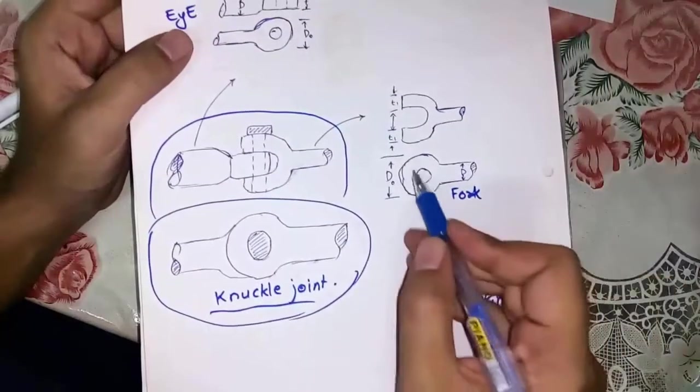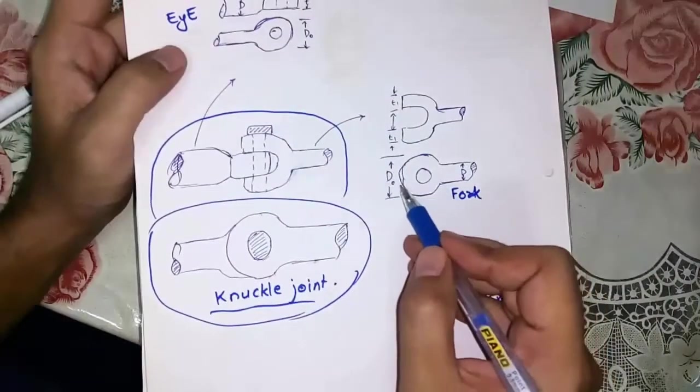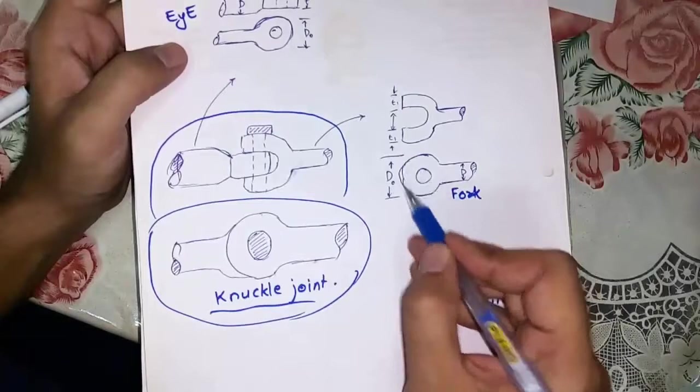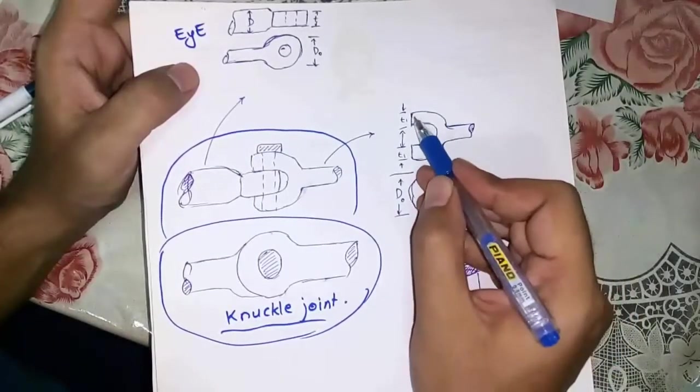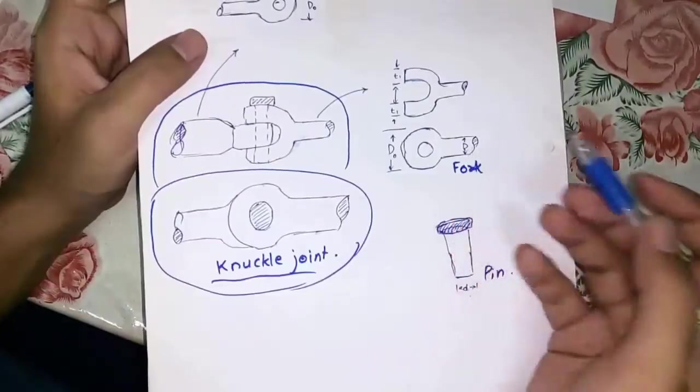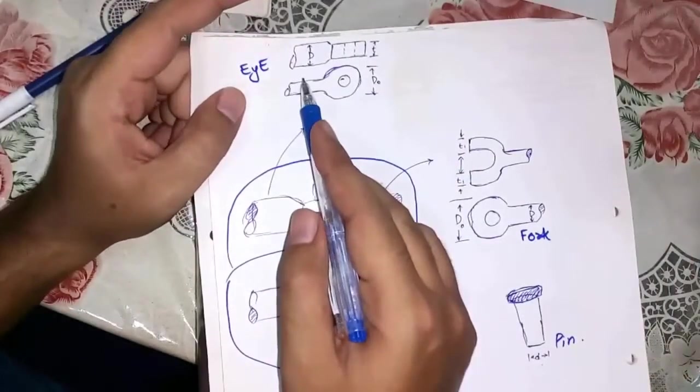The circular part of eye and circular part of fork have same diameter which is d0. Legs of the fork have different thickness than the eye, which is d1. d is the same diameter which is the end rod of the eye.